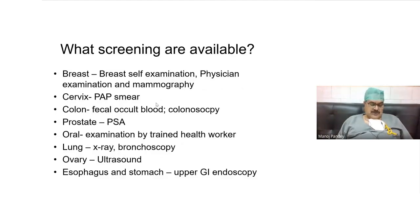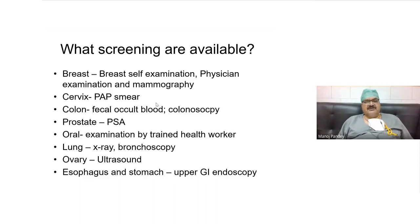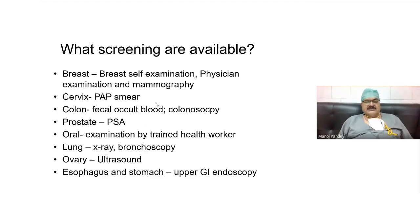Screening modalities available: for breast cancer, you have breast self-examination, physician examination, and mammography. For cervix, you have pap smear and HPV testing. For colon, you have fecal occult blood and colonoscopy. For prostate, you have PSA and digital rectal examination. For oral cancers, examination by trained health workers. For lung cancers, chest X-ray or bronchoscopy. Ovarian cancer screening is done by ultrasound, and esophagus and stomach can be screened by upper GI endoscopy. For most common cancers, one or another modality can be used for screening.